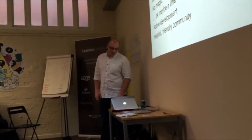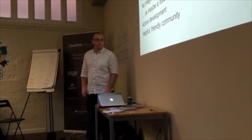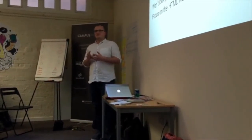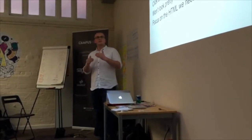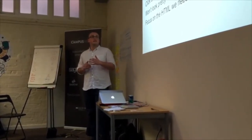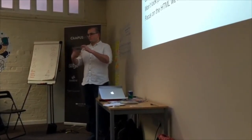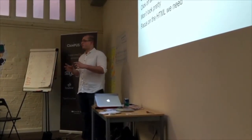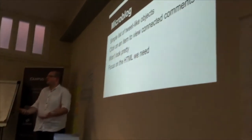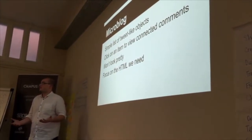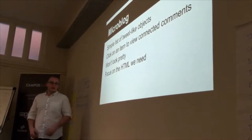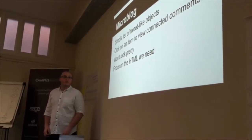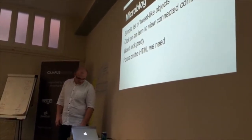For the application we're going to build a sort of microblog - a really simple list of tweet-like objects. You can click on an item to see comments connected to it. It's not going to look pretty; we're just going to focus on the HTML output because you can build that as complicated as you like as you become more familiar with Marionette or web development in general.